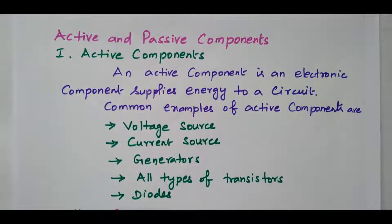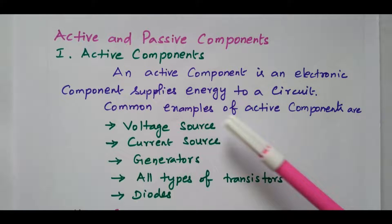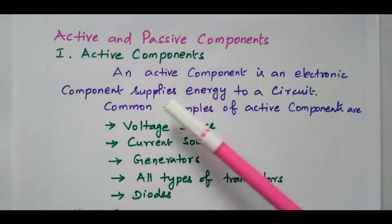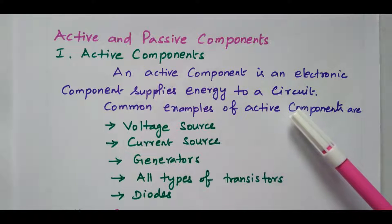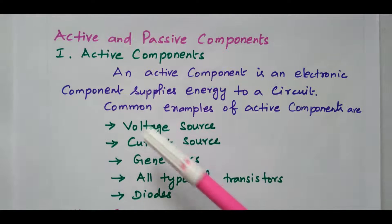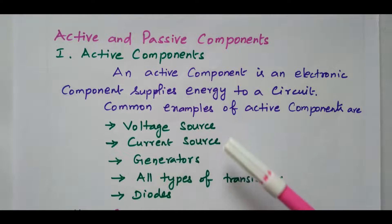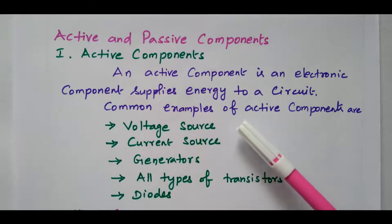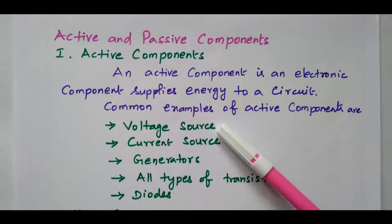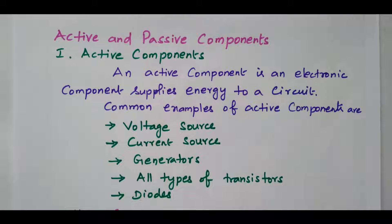Welcome viewers. In this video we will see the active and passive components. First we will see the active component. An active component is an electronic component that supplies energy to the circuit. That is why it is called an active component. Examples include voltage source, current source, generator, all types of transistors, and diode. These are all the examples for the active components. They are able to supply the energy in the circuit.